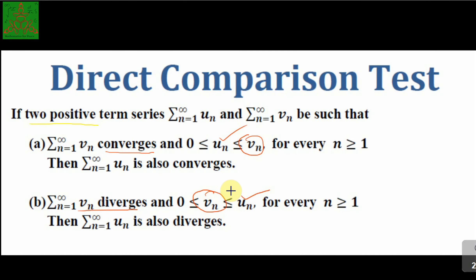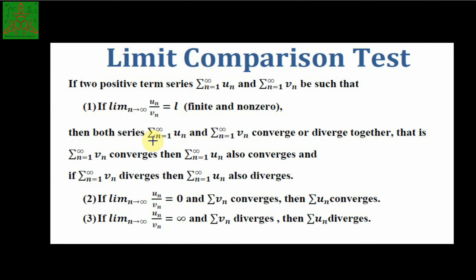These two statements were discussed in my previous lecture. The proof is available via the i-button. The next result we need is the limit comparison test, which states that if summation of u_n and summation of v_n are two positive term series and the limit of u_n / v_n equals L, a finite non-zero number, then...